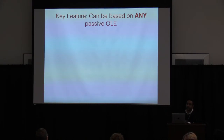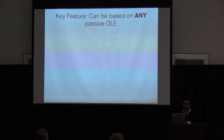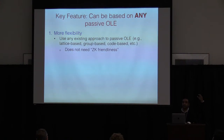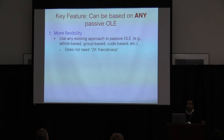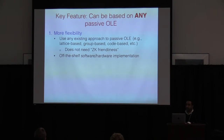The key feature is that we can base our protocol black-box on any passive OLE. This makes it more flexible — you don't need tailor-made, LWE-based, or any specific OLE. You can even imagine physical implementations of a passive OLE protocol. Compared to previous work, you don't need zero-knowledge friendliness to get active security. You can use any off-the-shelf software or hardware implementation.